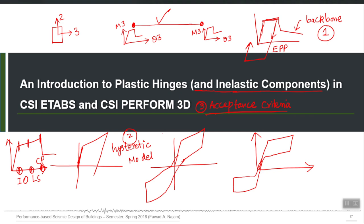In Perform 3D, because it is not ASCE 41 specific, you can give your own names to performance levels and define as many as five performance levels on both the positive and negative sides of the action-deformation curve. ETABS follows ASCE 41 definitions of performance levels, so it only uses IO, LS, and CP. You can set the IO level capacity corresponding to the initial yield point, LS corresponding to minor but still acceptable damage, and CP as the deformation capacity at which the structure will undergo significant damage but will not catastrophically fail.